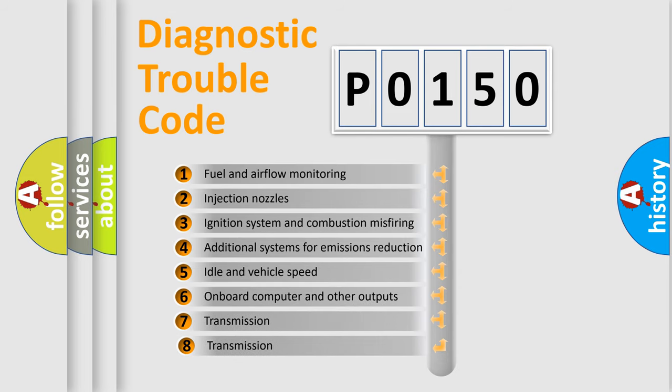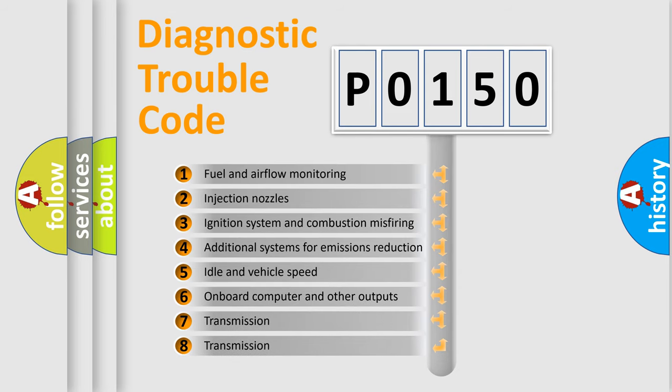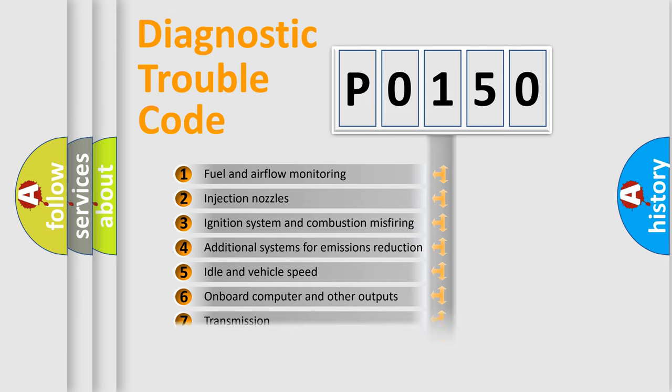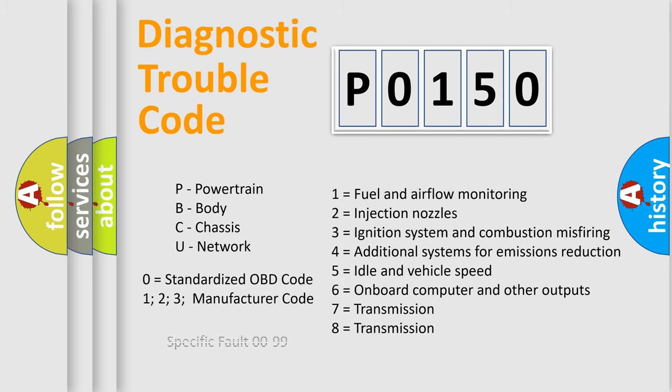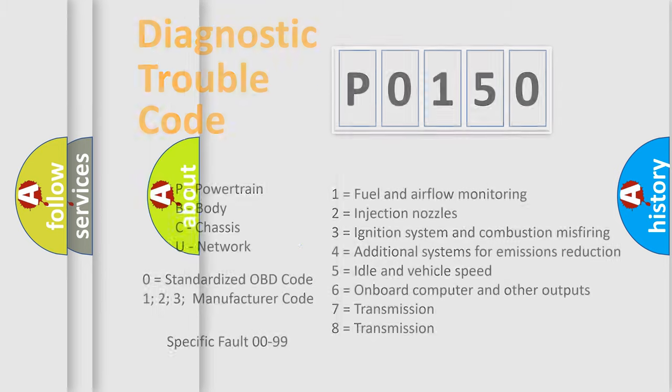The third character specifies a subset of errors. The distribution shown is valid only for the standardized DTC code. Only the last two characters define the specific fault of the group. Let's not forget that such a division is valid only if the second character code is expressed by the number zero.